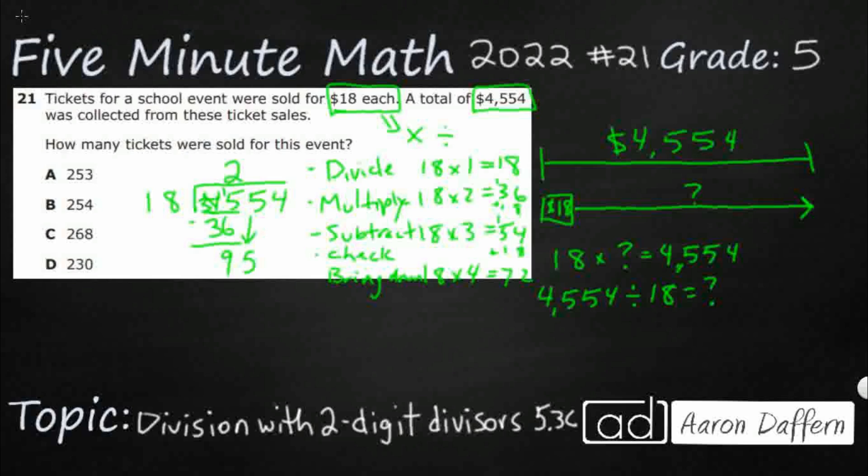So 95, and then you start all over again. I need to do 18 times 5. That's going to be 90. So there we go. Let's do a 5. That's 90. We're going to subtract. Check. That's good. Bring down again. And 54. Hey, look at that. That's 3. And that's going to be perfect. So my answer is A.